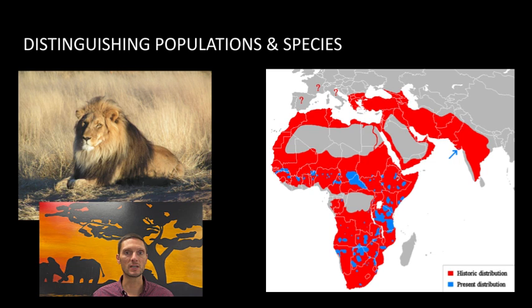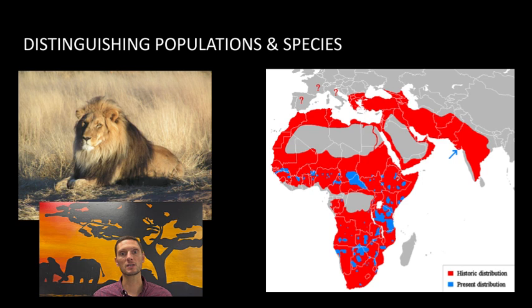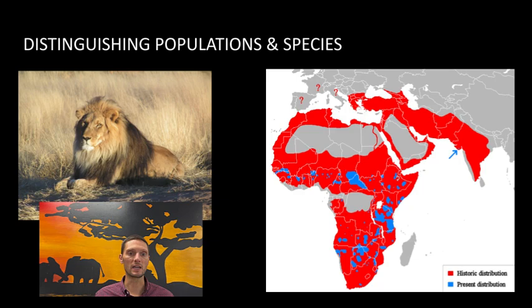A good example is lions. Throughout Africa there are different lion populations spread across the continent. They're the same species — Panthera leo — but they can experience gradual changes due to the specific environmental conditions of where they are. Those in eastern Africa might experience very different conditions than those in South Africa or Western Africa. The general consensus is that they are all the same species, currently, with slight variations in their DNA.